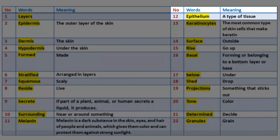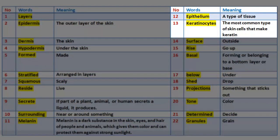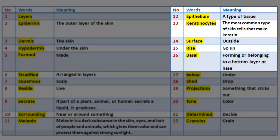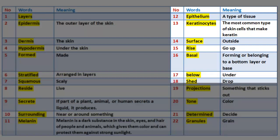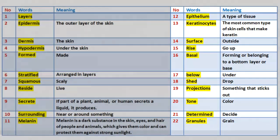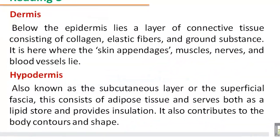Number 12: Epithelium — a type of tissue. Number 13: Keratinocytes — the most common type of skin cells that make keratin. Number 14: Surface — outside. Number 15: Rise — go up. Number 16: Basal — forming or belonging to a bottom layer or base. Number 17: Below — under. Number 18: Shed — drop. Number 19: Projection — something that sticks out. Number 20: Tone — color. Number 21: Determine — decide. Number 22: Granules — grain.